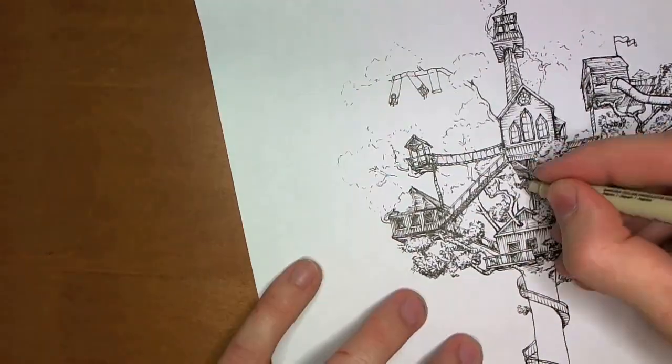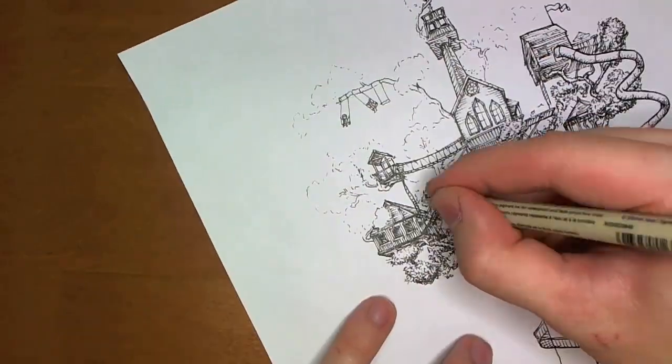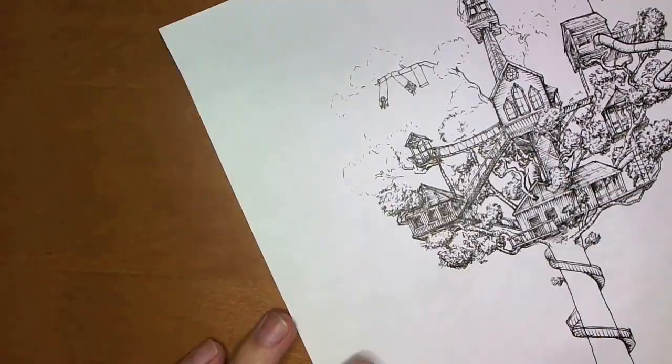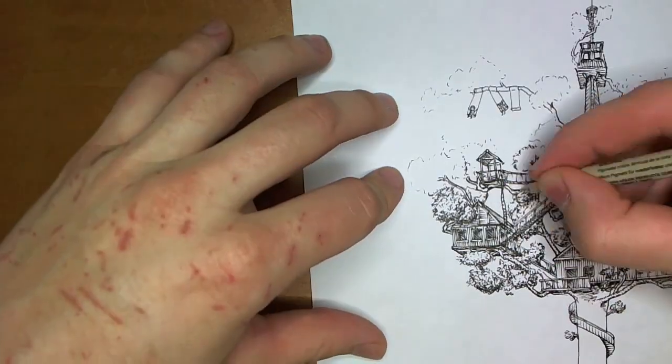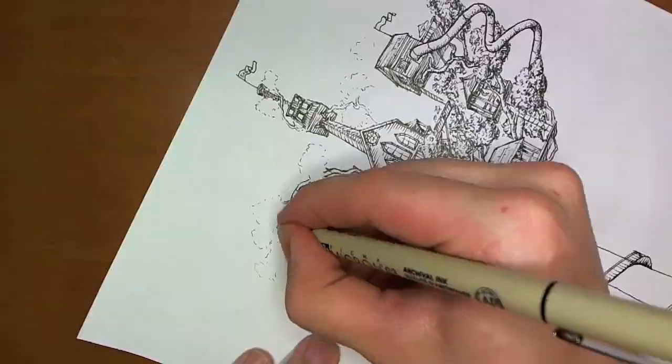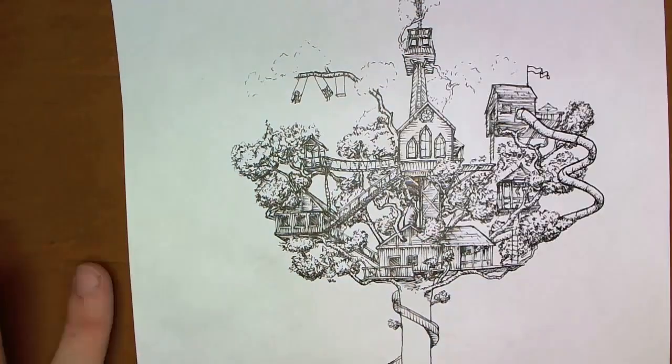But I put in a vanishing point somewhere behind or right below that bottom middle structure. So all the lines that would be going into the page, if you know what I mean, are all pointing at that and it gives some sense of perspective. I don't know. Vanishing points are hard for me to explain.